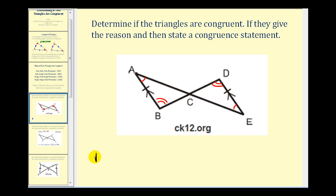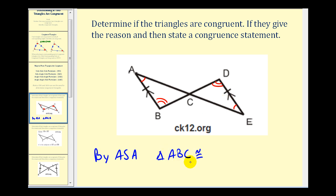Therefore, by angle-side-angle, triangle ABC would be congruent to the triangle on the right. We need to make sure we list these vertices in the corresponding order. Angle A corresponds to angle E, so vertex A corresponds to vertex E. Angle B corresponds to angle D, so vertex B corresponds to vertex D. And vertex C corresponds to itself.